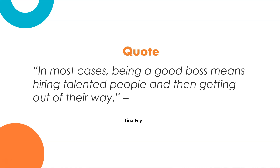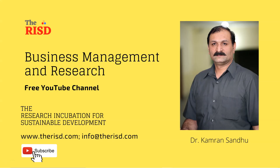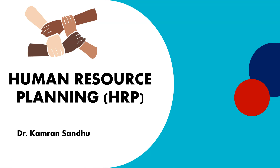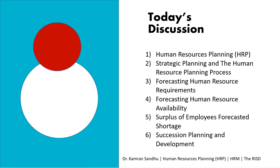In most cases, being a good boss means hiring talented people and then getting out of their way. — Tina Fey. Welcome, I am Dr. Kamran Sandhu from the Research Incubation for Sustainable Development. In today's video, you will learn about human resource planning process and forecasting techniques, how to calculate requirement and availability, and what action should be taken if workforce is surplus or shortage. Key points include: human resource planning, strategic planning and the HR planning process, forecasting requirements, forecasting HR availability, surplus of employee forecasted, shortage, and succession planning and development.